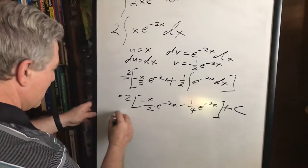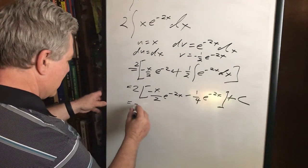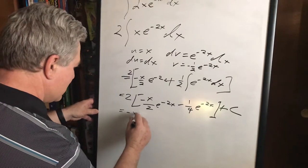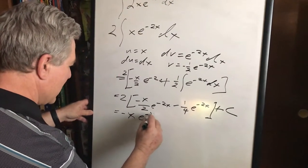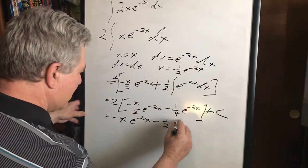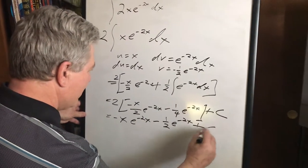A lot of times you can multiply that 2 in there. That equals, the 2 is cancelled out right here, that becomes negative x e to the negative 2x minus one half e to the negative 2x plus c.